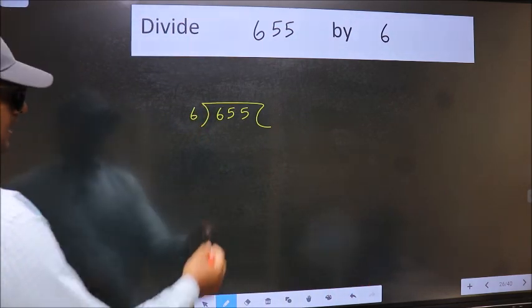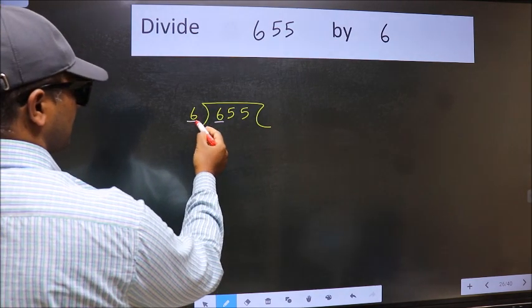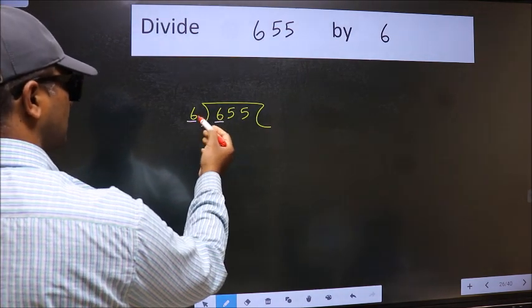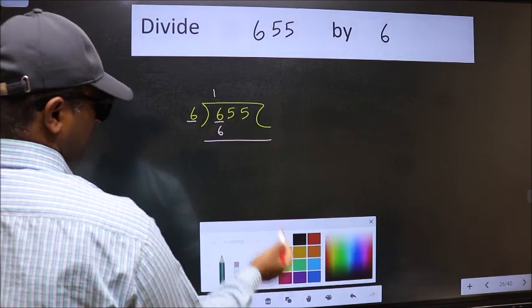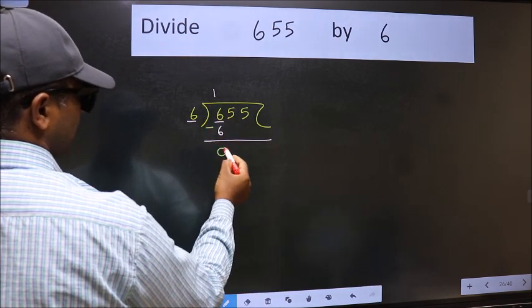Next. Here we have 6 and here 6. When do we get 6 in 6 table? 6 ones is 6. Now we should subtract. We get 0.